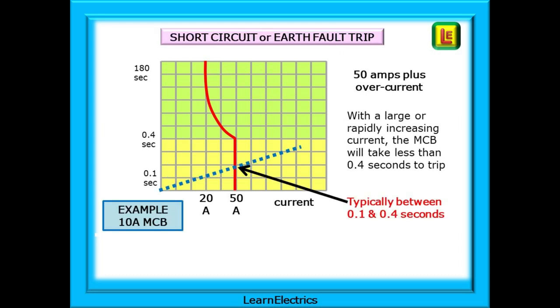But what happens with a short circuit or earth fault trip? Using the same 10 amp breaker we see that we have a rapid rise in current through the device. With hundreds of amps of fault current we very quickly exceed the 50 amp limit of current for a 10 amp device. As soon as the current exceeds 50 amps the device operates and all this happens between 0.1 and 0.4 seconds from the fault appearing. An almost instant response once the knee is reached.